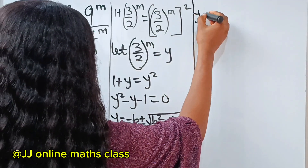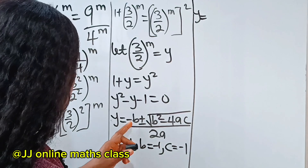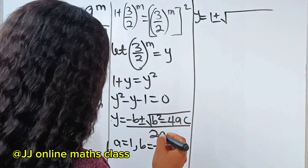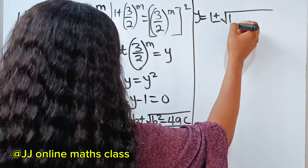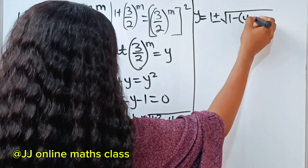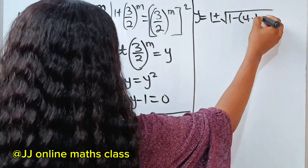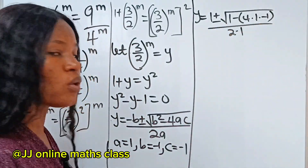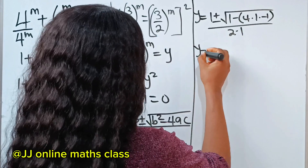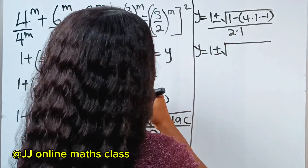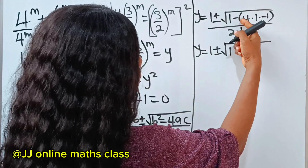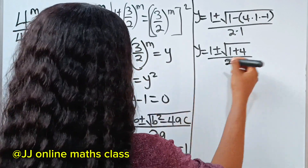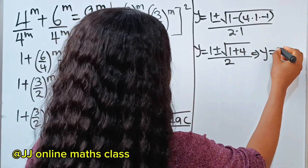Substituting into the formula: y equals minus (minus 1), which gives plus 1, plus or minus square root of (minus 1) squared minus 4 times 1 times (minus 1), divided by 2 times 1. That simplifies to y equals 1 plus or minus square root of 5, divided by 2.